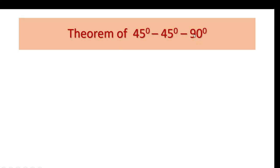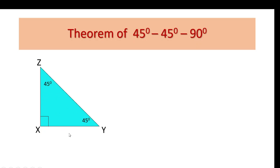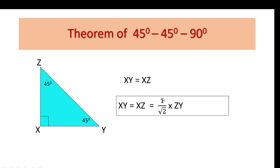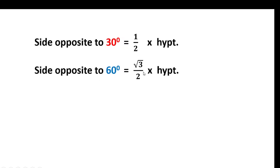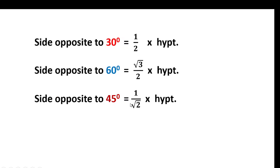Theorem of 45-45-90 degree triangle. In triangle XYZ, angle Y is equal to 45 degrees, angle Z is equal to 45 degrees, and angle X is equal to 90 degrees. Since both angles are 45 degrees, by the converse of the isosceles triangle theorem, side XY is congruent to side XZ, so XY equals XZ. The side opposite to 45 degrees is equal to 1 upon root 2 into the hypotenuse ZY. Summary: side opposite to 30° = half × hypotenuse; side opposite to 60° = root 3 upon 2 × hypotenuse; side opposite to 45° = 1 upon root 2 × hypotenuse.